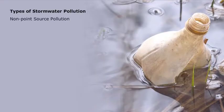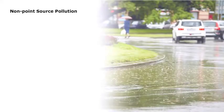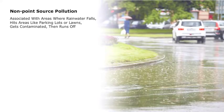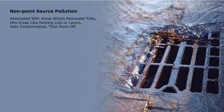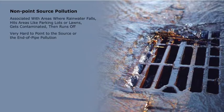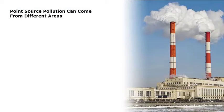There are also things called nonpoint source pollution and point source pollution. Nonpoint source pollution is associated with parking lots, highways, lawns, and other places in urban areas where rainwater falls, gets contaminated, and then runs off. This runoff is classified as a type of nonpoint source pollution. The reason it is called nonpoint source is because it is very hard to actually point to the source.